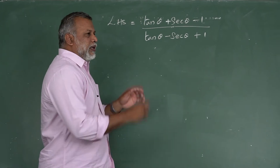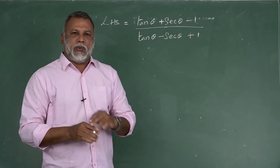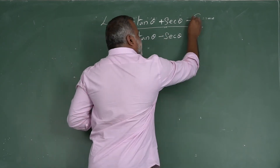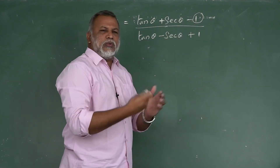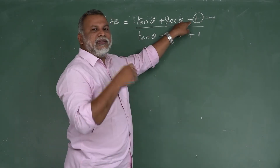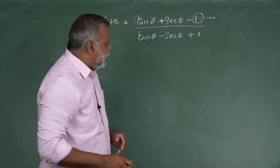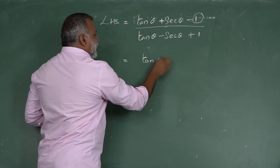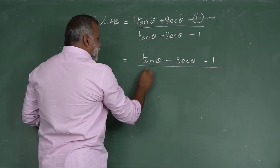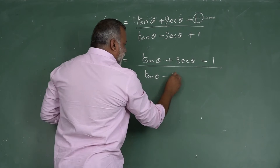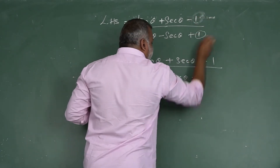In the previous method we replaced the '1' in the numerator. Now I will replace the '1' in the denominator using sec²θ - tan²θ = 1. So in the denominator: tan θ - sec θ + (sec²θ - tan²θ). The numerator tan θ + sec θ - 1 is kept as it is.